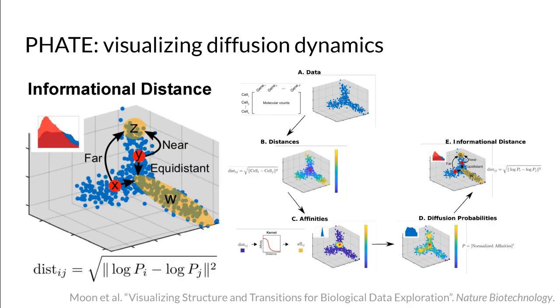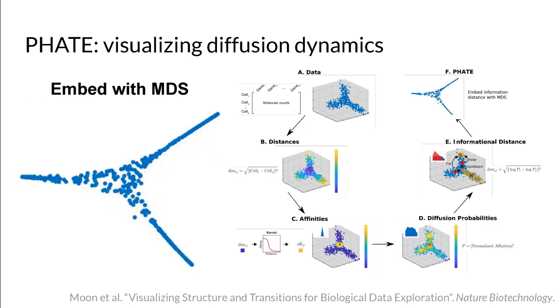Next, these transition probabilities are converted into an informational distance that upweights long-range distances in order to enforce global structure. Finally, this informational distance matrix is embedded in low dimensions using MDS.